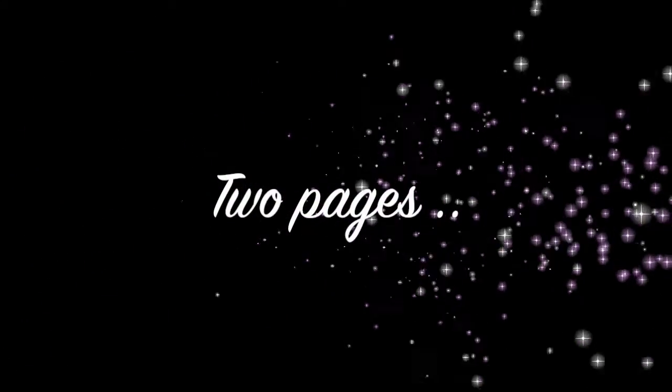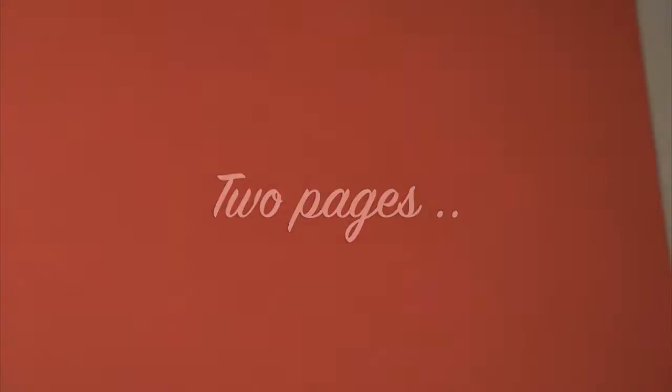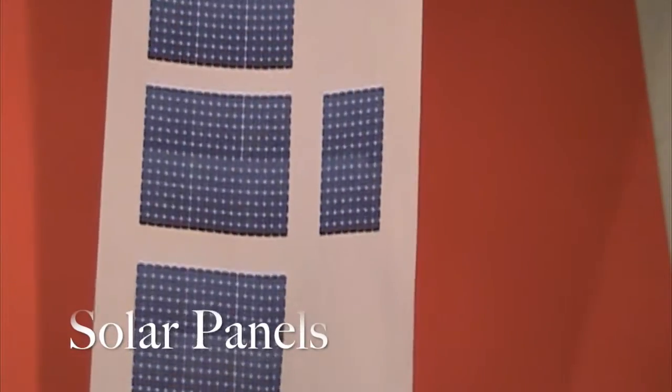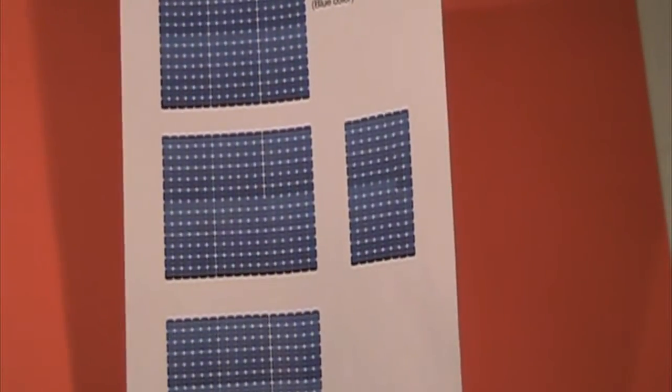We'll start with the two pages that you should already have downloaded. One of them is a sheet of solar panels. The other is a sheet of roads and flags.